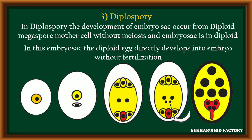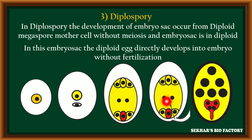The third method is diplospory. In diplospory, the development of the embryo sac takes place from the megaspore mother cell but without meiosis division. The megaspore mother cell directly produces a megaspore that is diploid in nature due to absence of meiosis division. This diploid megaspore produces a diploid embryo sac, and each cell in this embryo sac is diploid along with the egg cell. This diploid egg cell directly becomes a diploid embryo without fertilization.